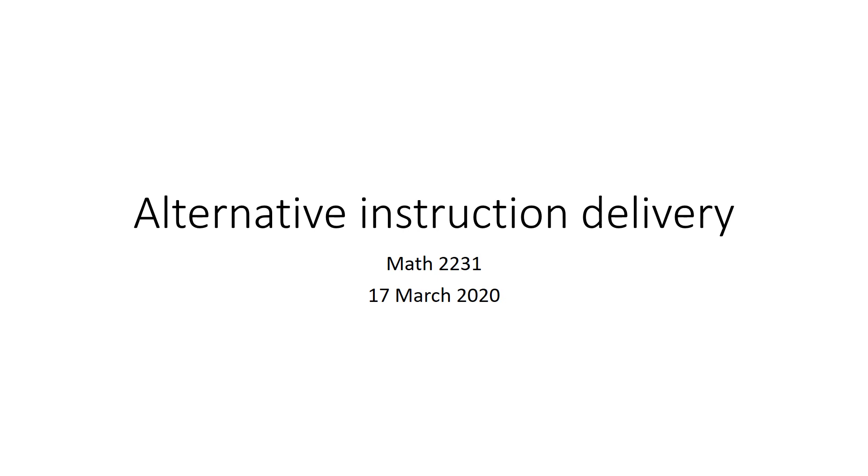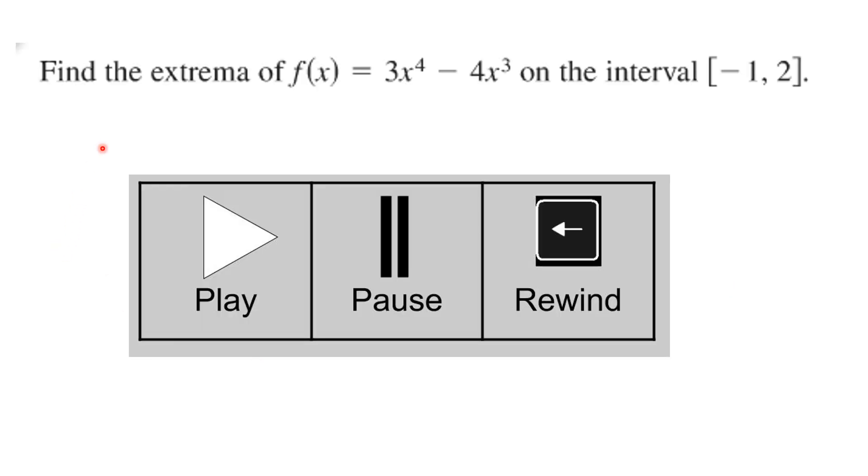Hello. Alternative instruction delivery for MATH 2231, March 17th, 2020. We're going to look back for a moment because we learned last time in class how to find the extrema of a function on a closed interval. So here is a function and you're to find the extrema on the closed interval minus one to two. You want to validate this satisfies the if part and then the then part follows and so find the absolute extrema of that function on the interval.